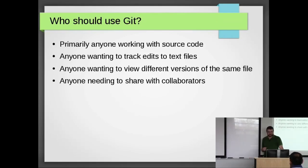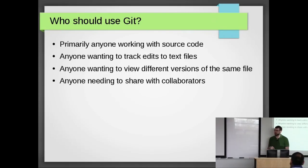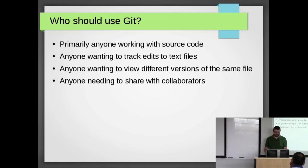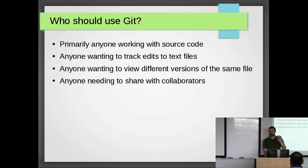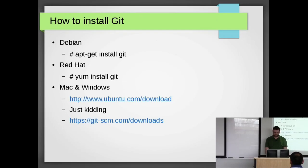So who should use Git? Now we know what it is — who should use it? Anyone working with source code. I remember before we used to just copy a folder, put a date on it, and edit it in that folder. But then what if two people are editing the same file? It was a nightmare. Anyone who wants to track edits to text files, like plain text documents, track different versions of the same file, or anyone needing to share with collaborators — if you have plain text format and want to share with multiple people and see which people changed what, when, this is the thing for you.